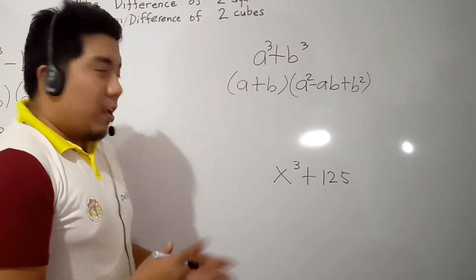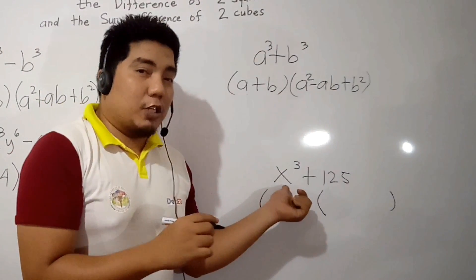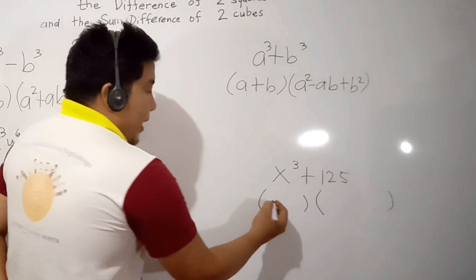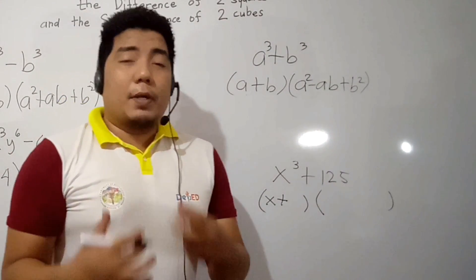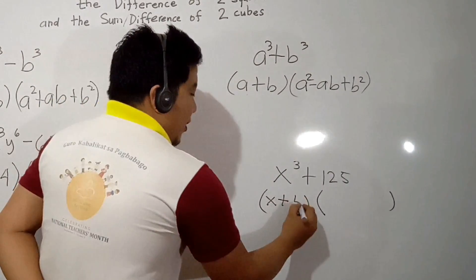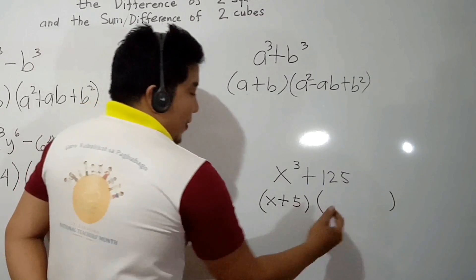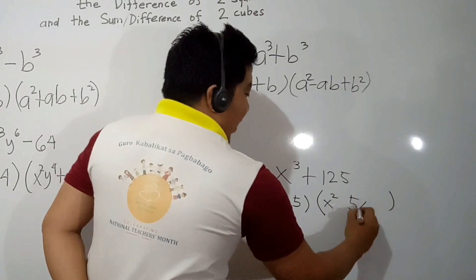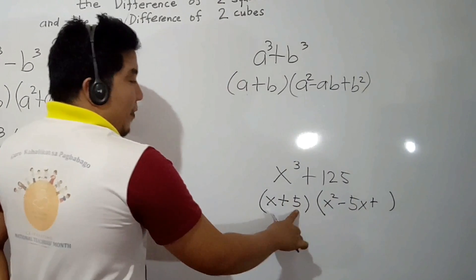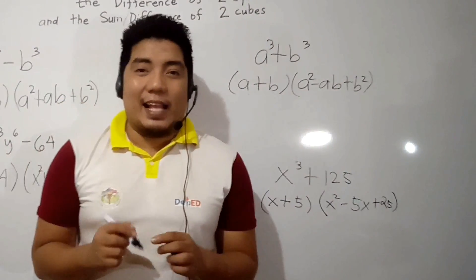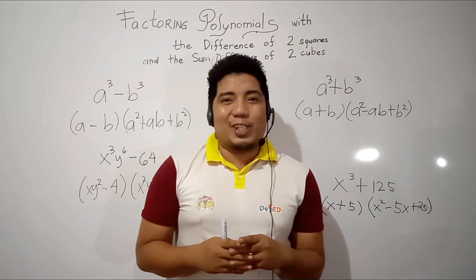Now let's go to x cubed plus 125 — an example of the sum of two cubes. We make a small quantity and a bigger quantity. What expression multiplied 3 times by itself gives x cubed? That is x. We follow the sign, which is plus. The cube root of 125 — a number multiplied 3 times by itself to give 125 — that is 5. Now for the second factor: x times x is x squared. We multiply them together to get 5x, and the sign is opposite — minus. Finally, we put plus, and the square of 5 is 25. That is your final answer. Now it's time to challenge you — these are the Try These Exercises.